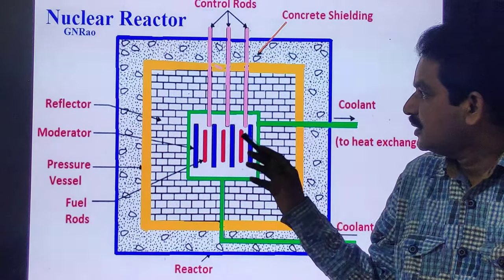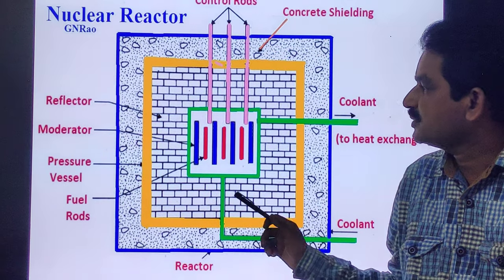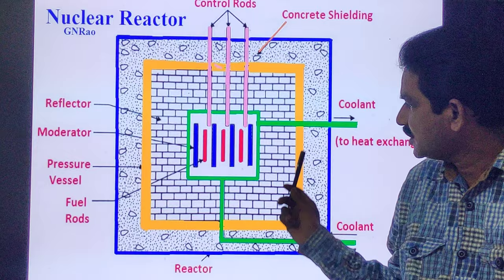There is a neutron reflector around the core which is usually formed of stainless steel rings that accurately surround the nuclear fuel assemblies.